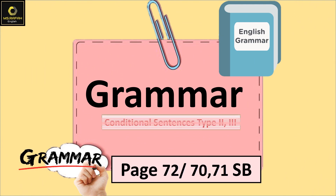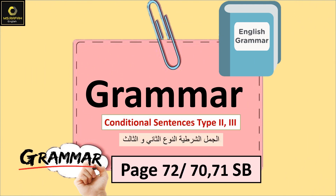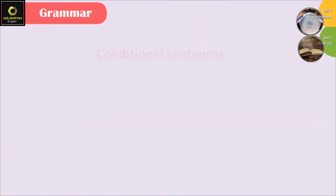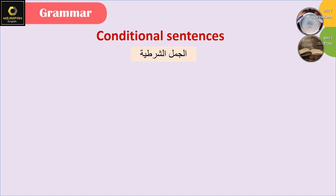Grammar: Conditional sentences type 2 and 3. The page number differs between the literary and science streams. Today our lesson will be about conditional sentences. There are four types of conditional sentences: type 0, type 1, type 2, and type 3. Today we will focus on type 2 and type 3 only.